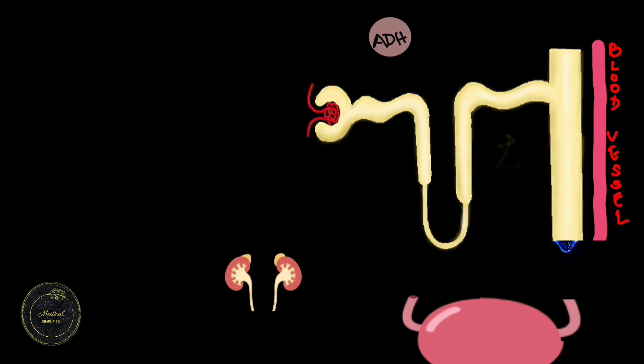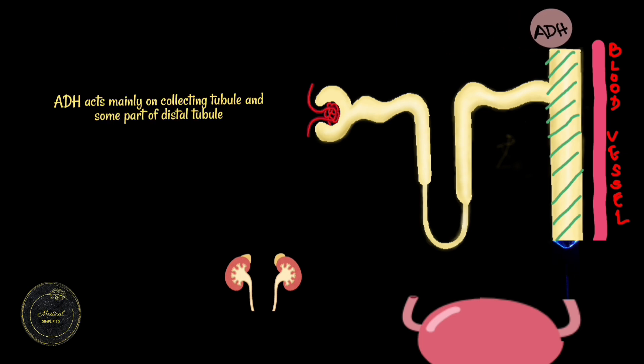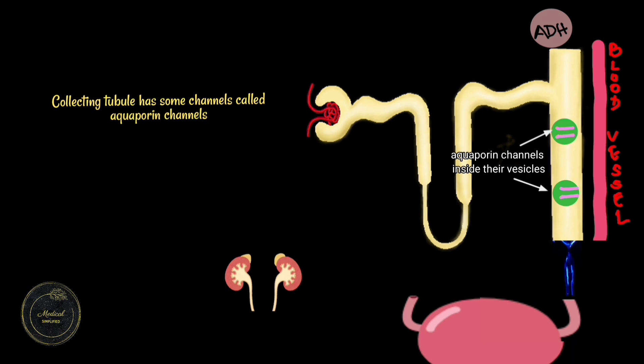Now coming back to ADH. ADH mainly acts on the collecting tubule and some part of the distal tubule. In the collecting tubule, we have channels known as aquaporin channels which are normally enclosed within their vesicles.